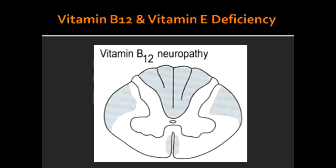What effect does vitamin B12 or vitamin E deficiency have on the spinal cord? Vitamin B12 or vitamin E deficiency can lead to subacute combined degeneration, in which there is demyelination of the dorsal columns. The lateral corticospinal tracts are also affected, as well as the spinocerebellar tracts.